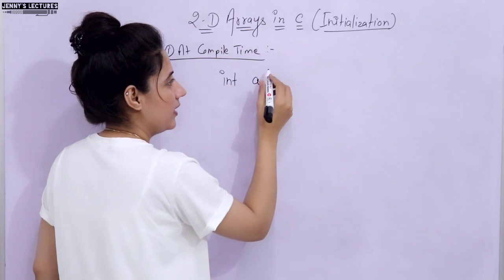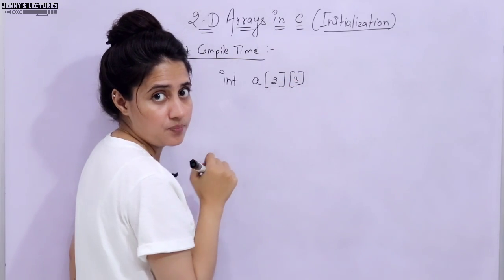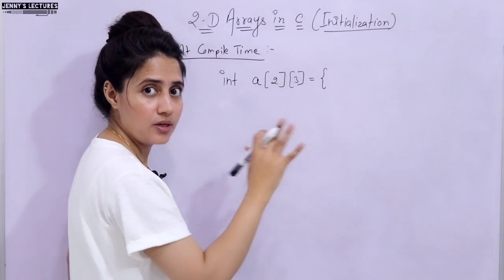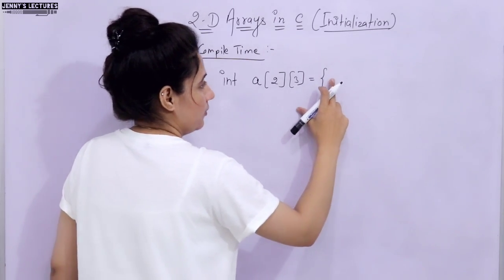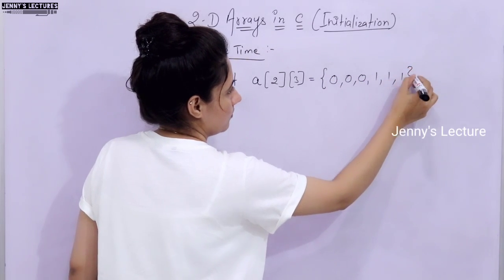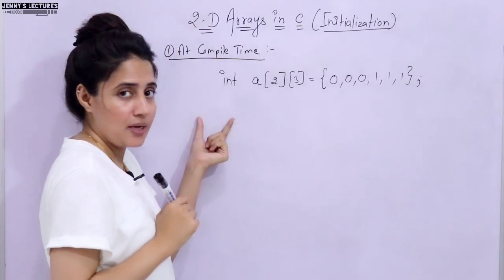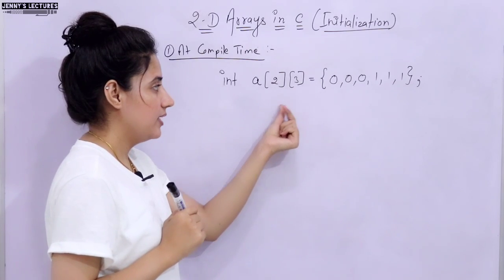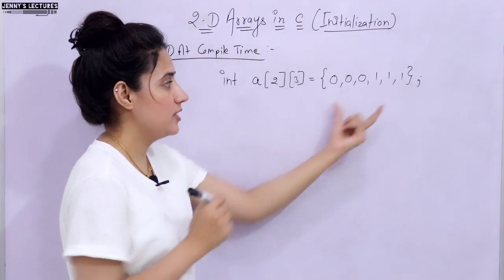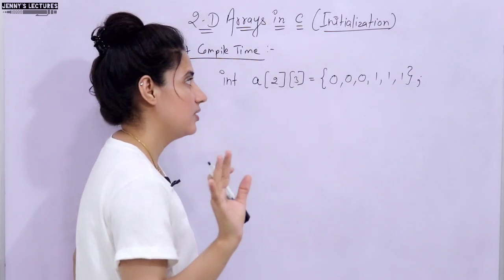To declare a 2D array, you write the data type, then the name of the array, then the row size — suppose 2 — and then the column size — suppose 3. So 3 columns and 2 rows. Then in curly braces, give the values: for example, 0, 0, 0, 1, 1, 1. The general syntax is: data type, name of array, [row size][column size] = { list of values }.